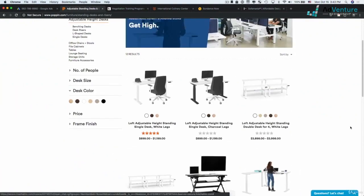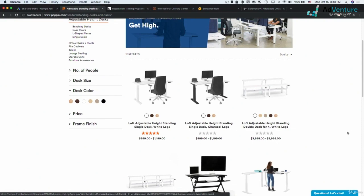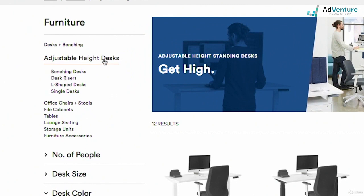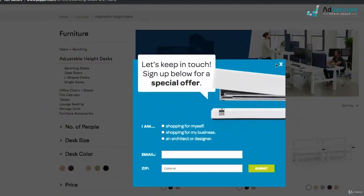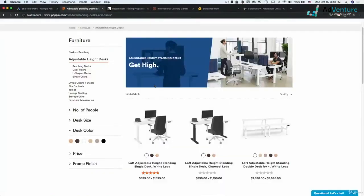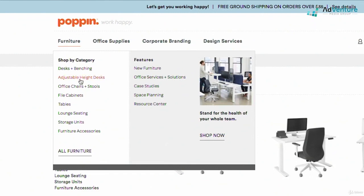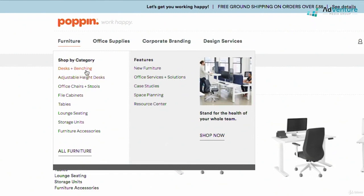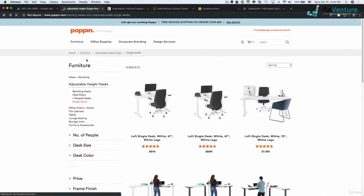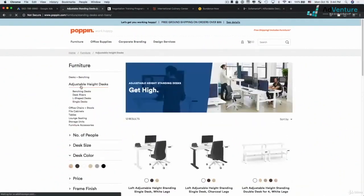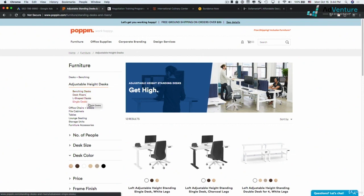If I click into adjustable height desks in my ad group, I'll see that I have these products and product pages. You want to also think about what page you want to send that traffic to. You don't want to be too broad and you also don't want to be too specific. If somebody's searching for adjustable height desks or standing desks, this page that we're on now would be a good place to send that traffic to.